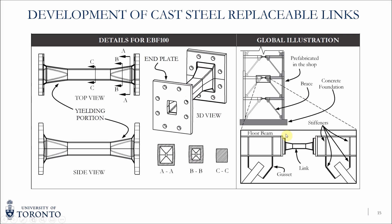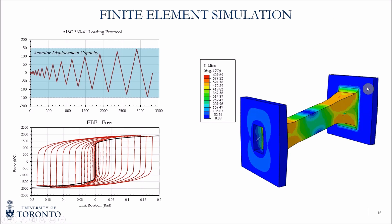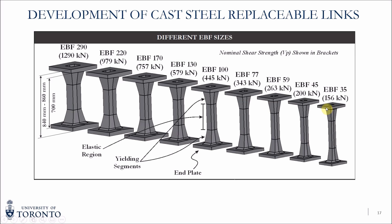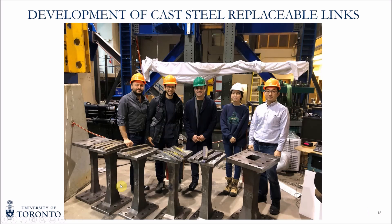Cast steel replaceable links use the same idea in that they are replaceable, but they use steel casting technology, which means better quality control, better ductility, and better low cycle fatigue life. These links are designed as a tapered HSS where the capacity of the yielding portion follows the moment diagram, and the link experiences simultaneous yielding in the yielding portion — FE results confirm the yielding portion yields while the middle segment remains elastic. We currently have a product line consisting of nine different EBF sizes, where the number next to the EBF denotes the nominal shear capacity in kips, with kilonewton equivalents in brackets. These are shown in real size, from the smallest to the largest, EBF 290.